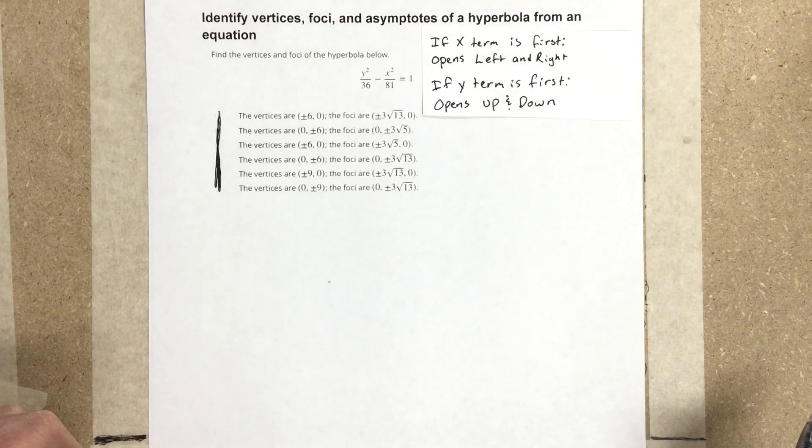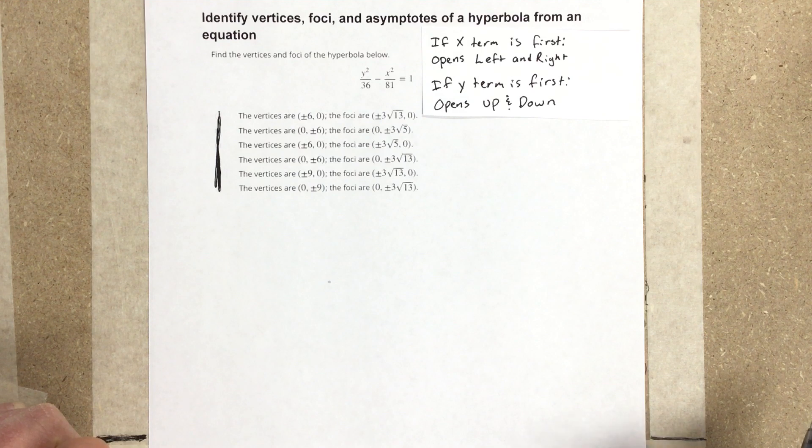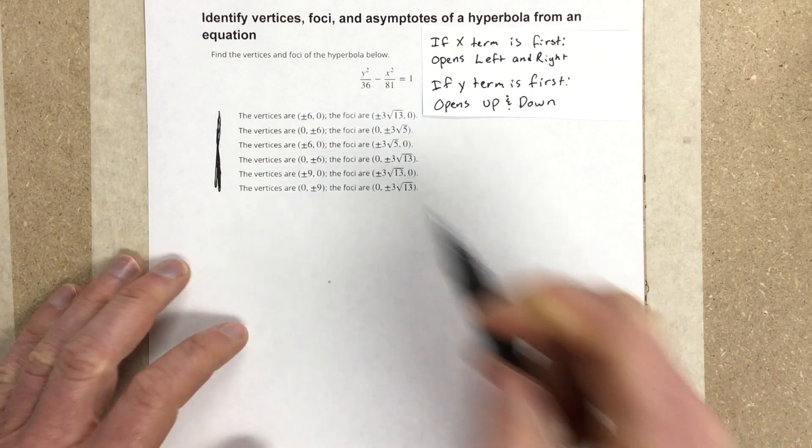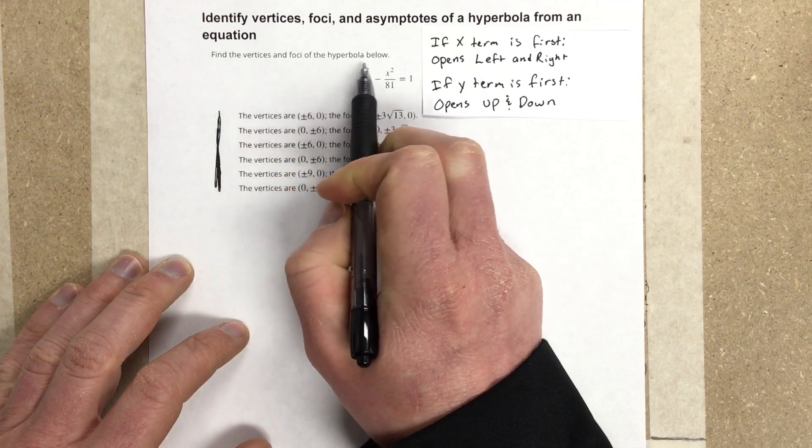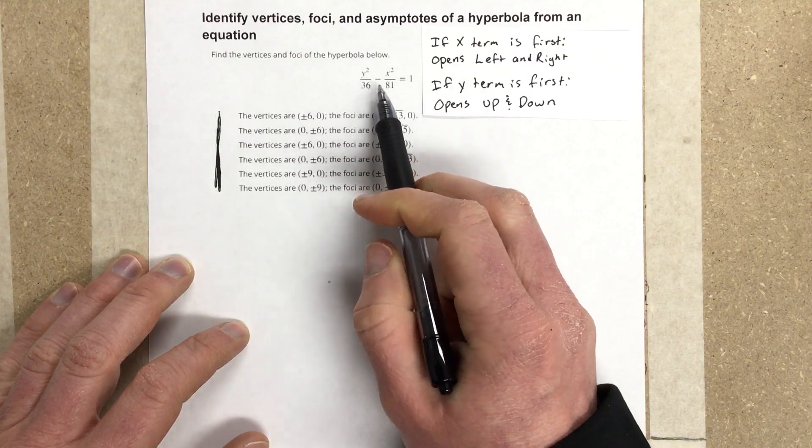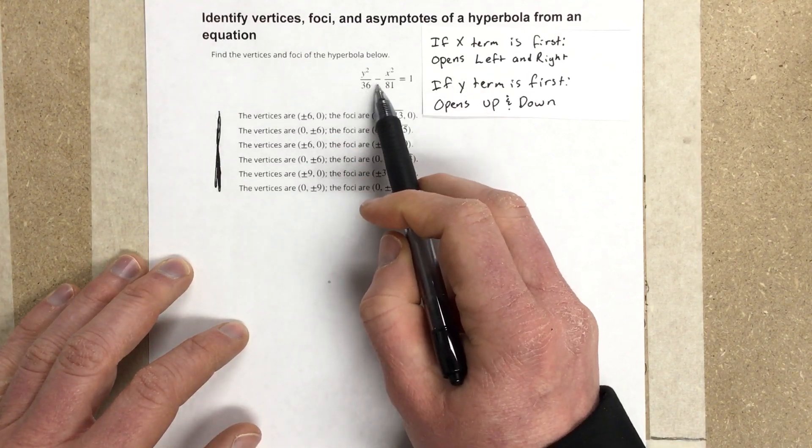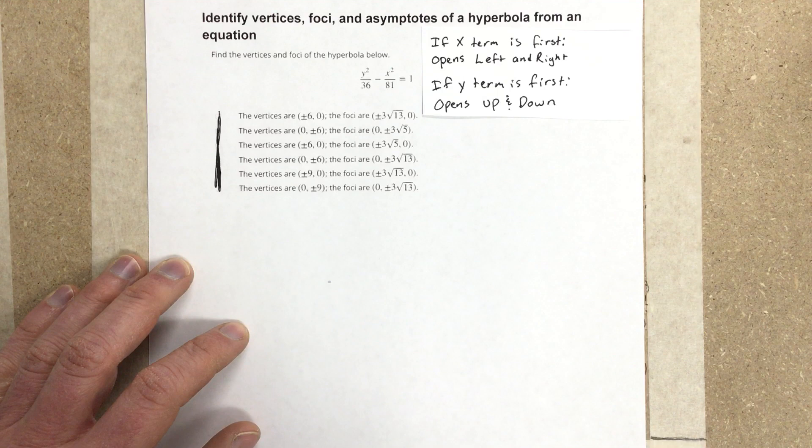In this video, we're going to identify vertices, foci, and asymptotes of a hyperbola from an equation. It says find the vertices and foci of the hyperbola below, and they give you y squared over 36 minus x squared over 81 is equal to 1.